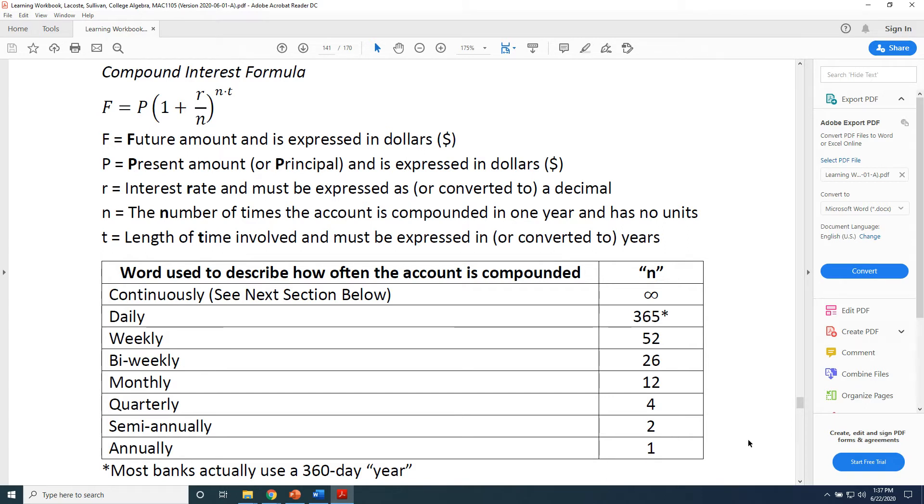Well, there are four quarters in a dollar and there are four quarters in a year. So therefore, you will receive money in your account four times in a one year period. That's n.